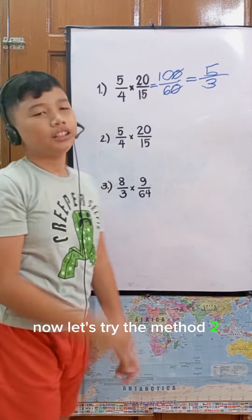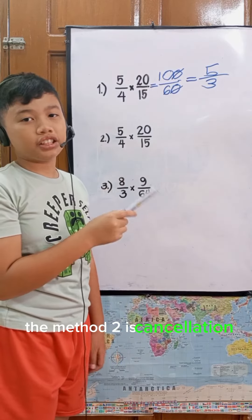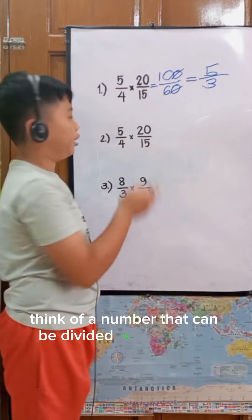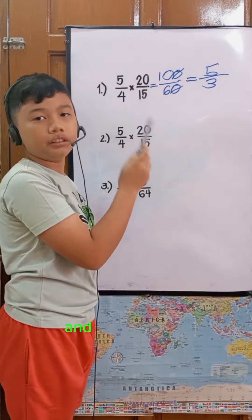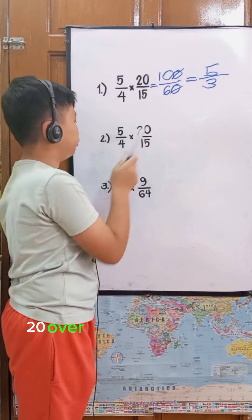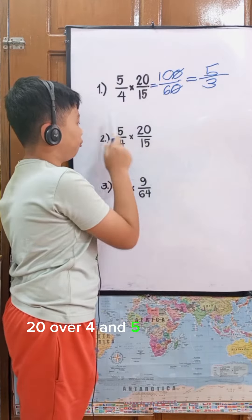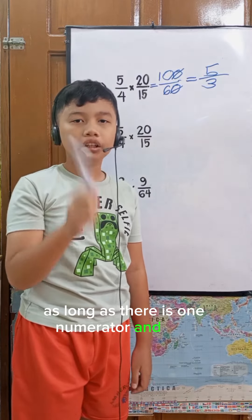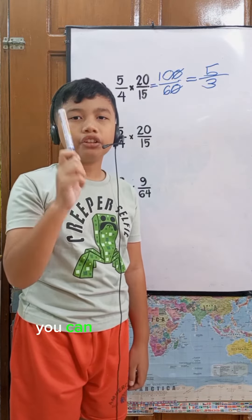Now let's try method 2. Method 2 is cancellation. Think of a number that can be divided by a numerator and a denominator. It can be 20 over 15, 20 over 4, or 5 over 15. As long as there is one numerator and one denominator, you can use cancellation.